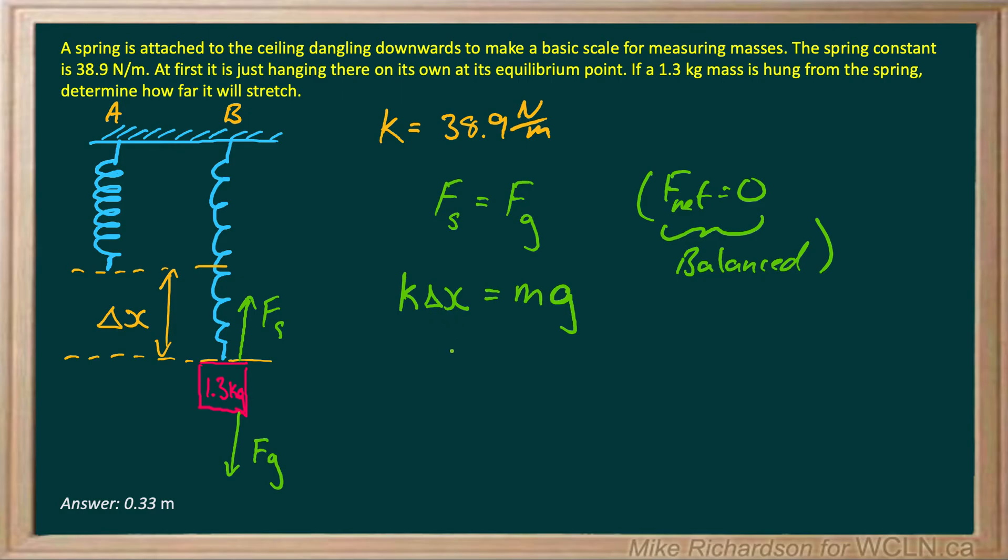Now we're trying to figure out how far the spring stretches. We're trying to find delta x. So delta x will be mg all over k which is 1.3 kilograms times 9.8 meters per second squared, all divided by 38.9 newtons per meter.